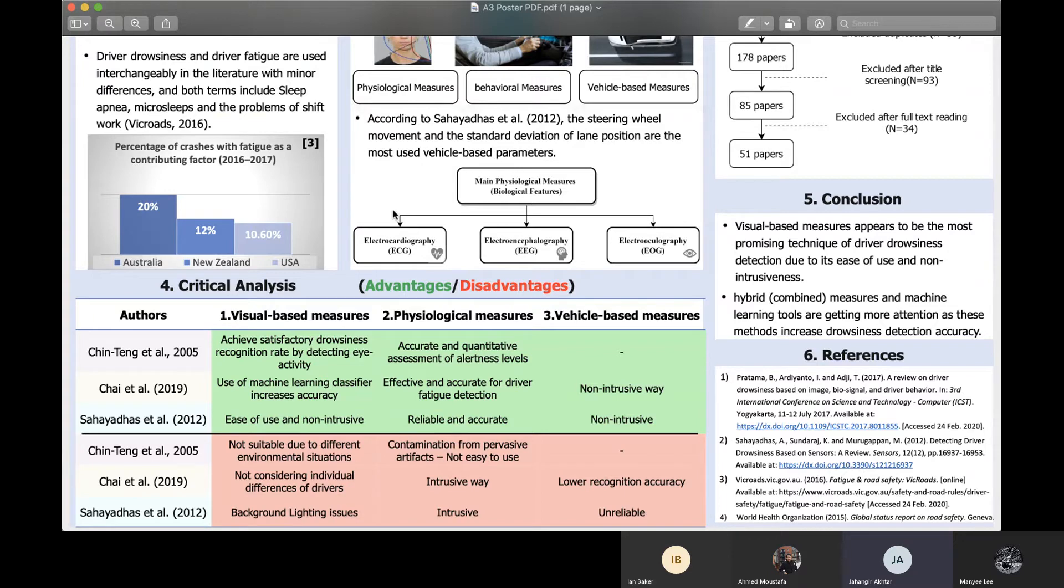So from these, I'm going to assume, and you tell me if I'm wrong, that you had three themes: the visual-based measure, the physiological measure, and the vehicle-based measure, yeah? Yes, yes. Those are my three main themes. Okay. And these were the most important things which came out. The green were the advantages and the red was the disadvantages, yeah? Yeah. Okay, so that's really good.